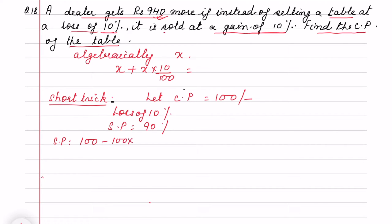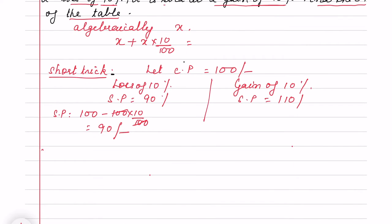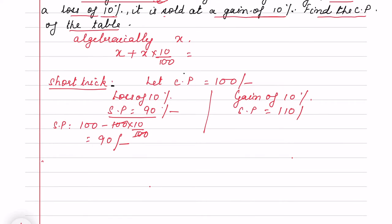It is 100 minus 10% of 100, that will be 90 rupees. Same way, in another case if I am selling at a gain of 10%, that means selling price is 110 rupees.